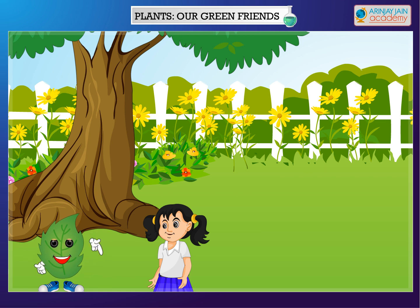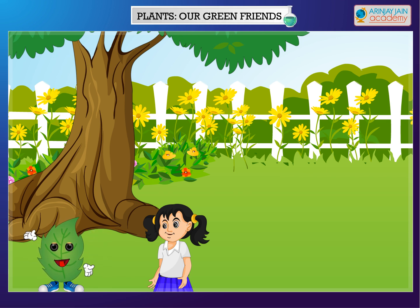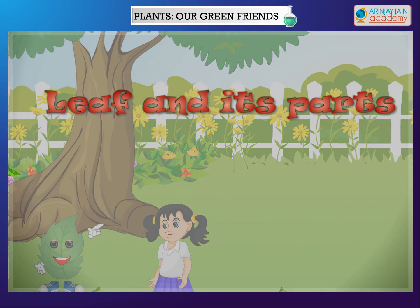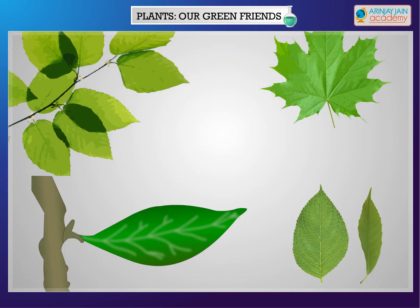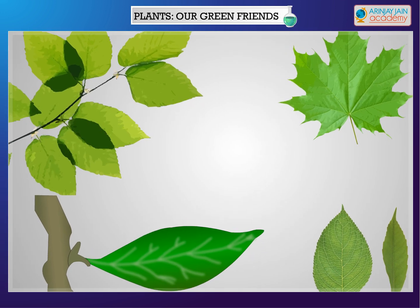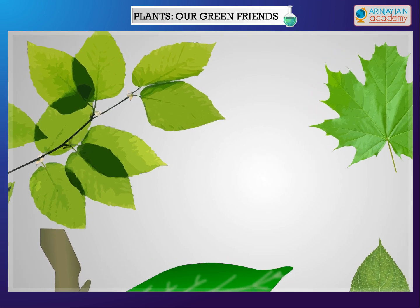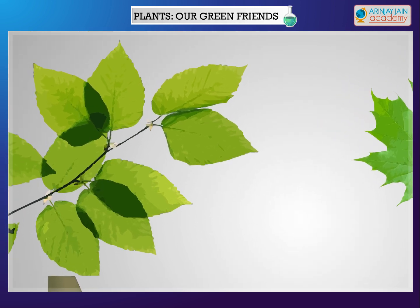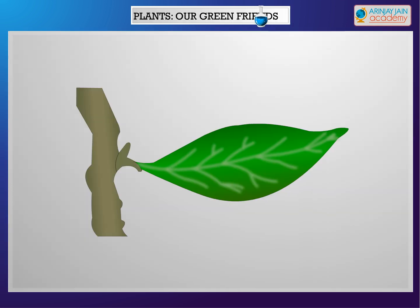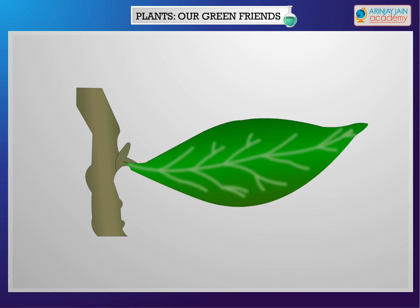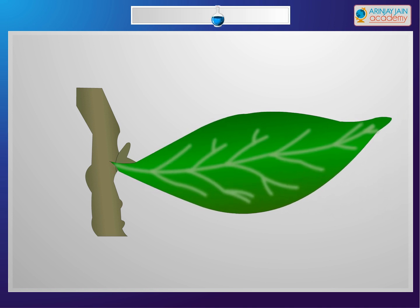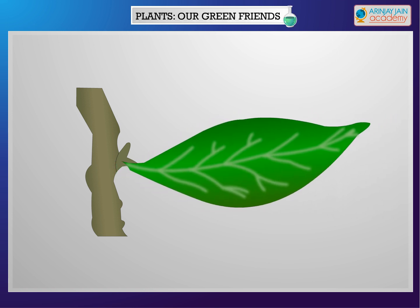Now have a look at the various parts of the leaf. There are different types of leaves which help us to distinguish different types of plants. A typical leaf is an outgrowth of a stem and has the following different parts.